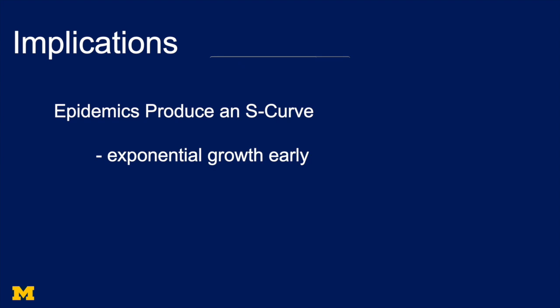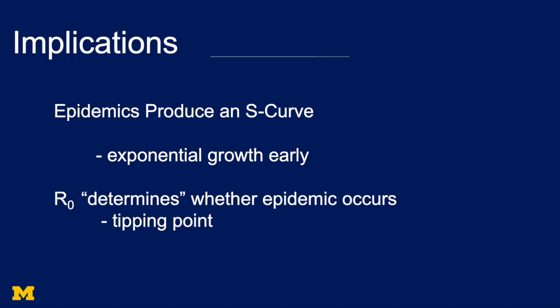Epidemics produce an S-shaped curve, and there's going to be exponential growth early. That means, if you see 5 cases, 15 cases, 50 cases, it could be reason to worry if the number of cases is increasing quickly.